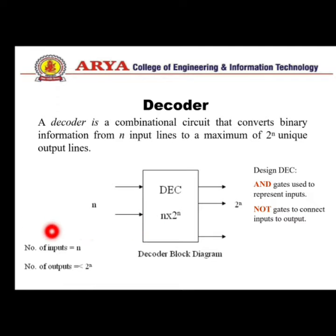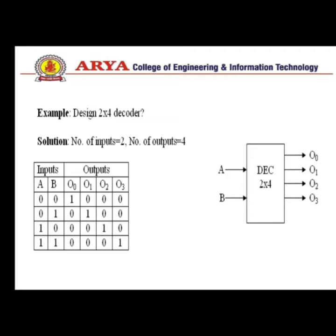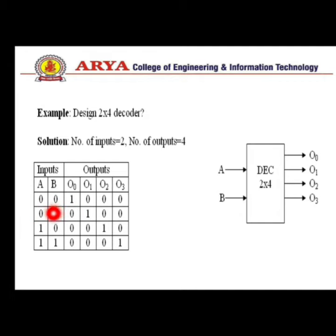First we understand the 2-to-4 decoder, in which the number of inputs is 2 and the number of outputs is 4. We create the truth table for this decoder. Since the number of inputs is 2, the maximum possible conditions are 4. We put values from 0-0 to 1-1, and the outputs are D0 to D3.